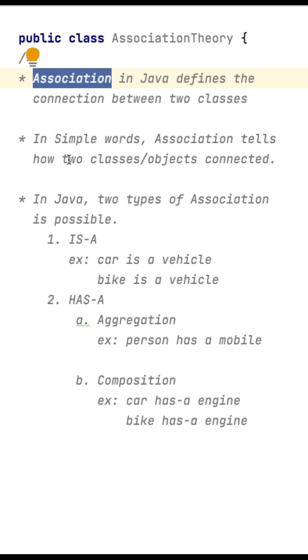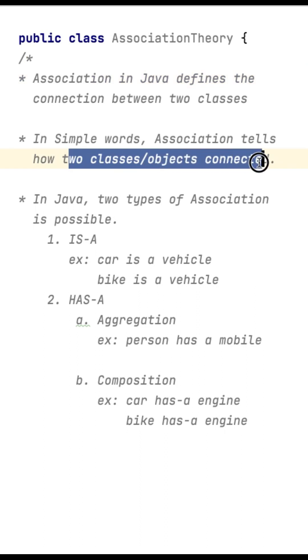In simple words, association tells how two classes or objects are connected. In Java, two types of associations are possible.